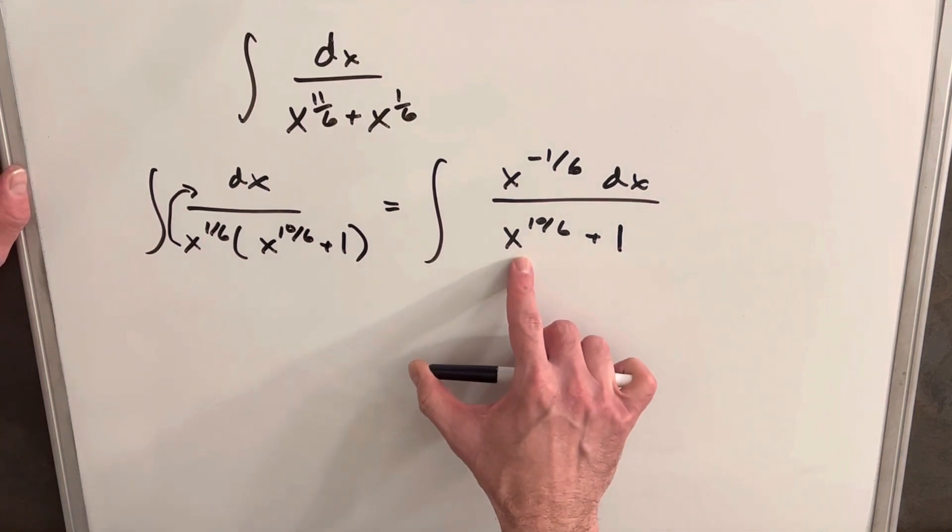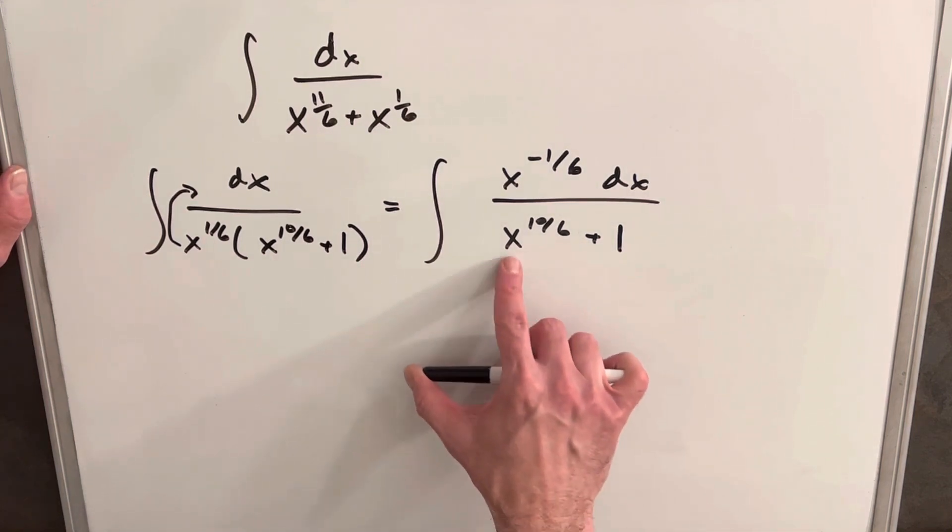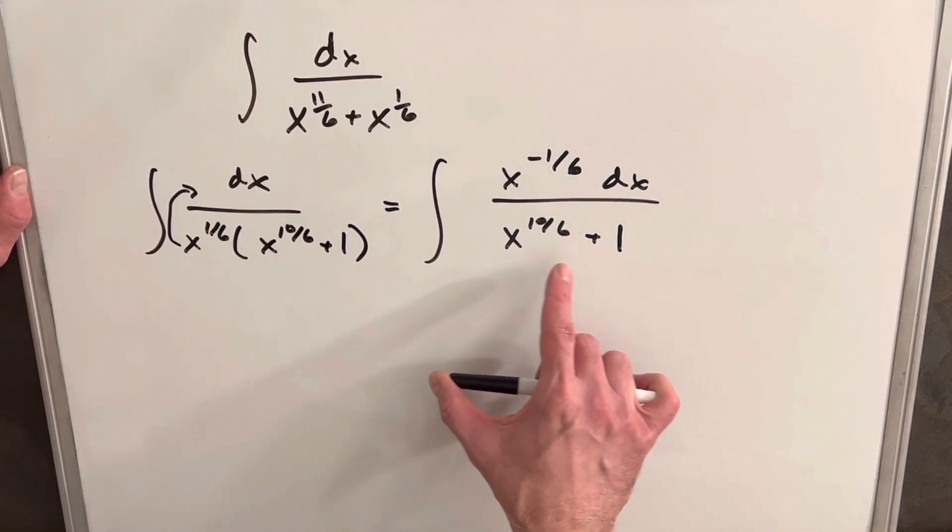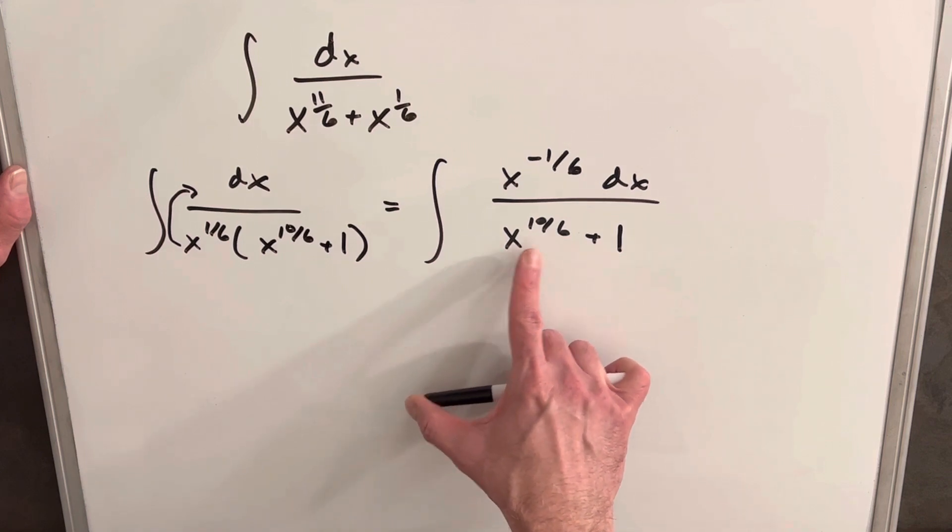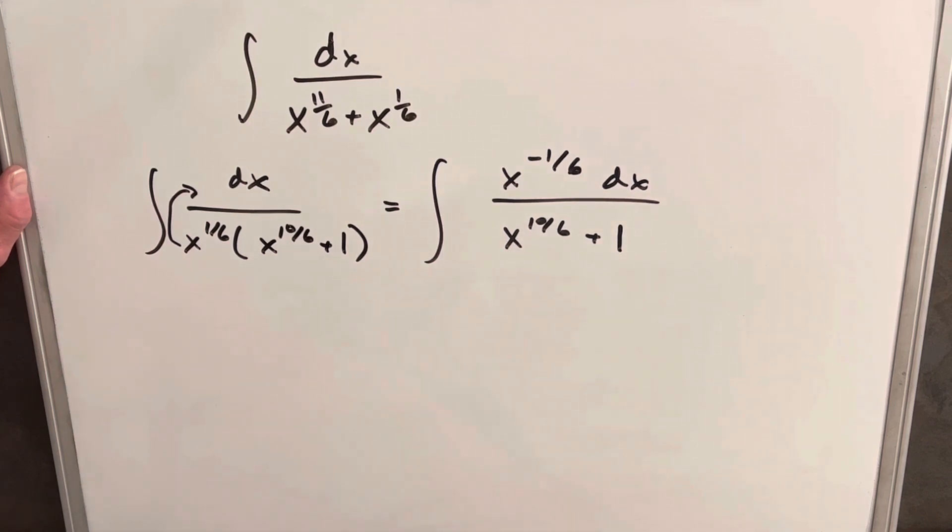And then from here, I want to do a u substitution. We can make the denominator our u. Just looking at x to the 10 sixth, the derivative of that's going to be like 5 over 6, like x to the 2 thirds. It's not going to fit very well with our numerator. It might work, but it's just going to probably make it harder.